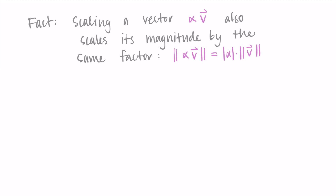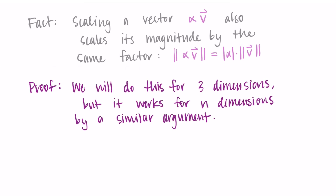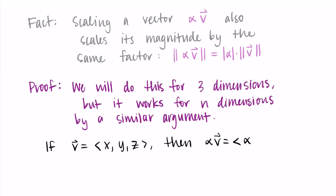Let's talk about how we know this is true. I'm going to do an almost formal mathematical proof but only in three dimensions — just know it would work for an n-dimensional case with a similar argument. Let's say vector v = ⟨x, y, z⟩. If we multiply alpha times v, where alpha is some scalar, we distribute alpha into each component to get ⟨αx, αy, αz⟩. I want to find the magnitude of this new scaled vector.